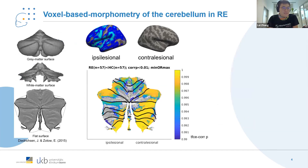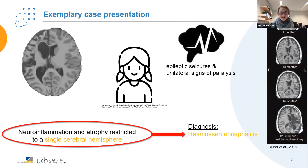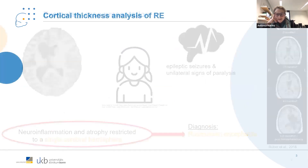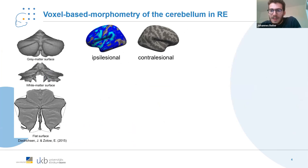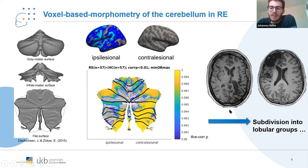Did you classify the patients by atrophy on the affected side or the unaffected side? We classified them regarding the atrophy on the affected side, because on the unaffected side there was not really much clear atrophy measurable — at least not very significant atrophy. So we definitely classified them according to the atrophy on the ipsilesional hemisphere.